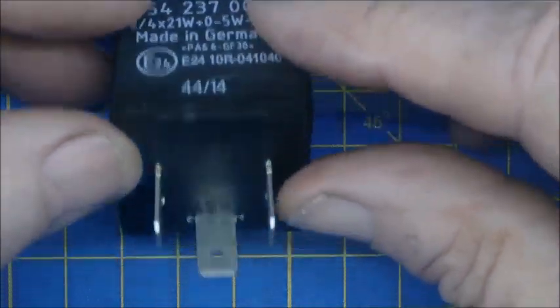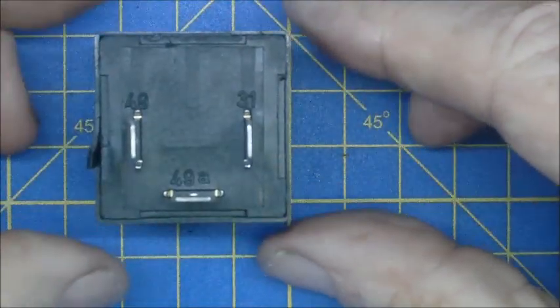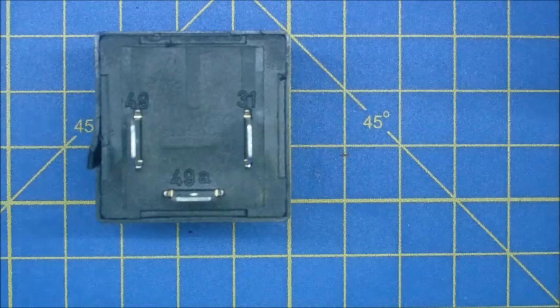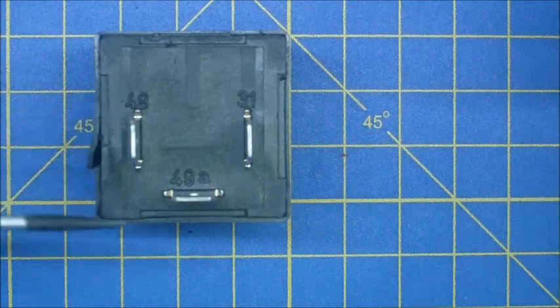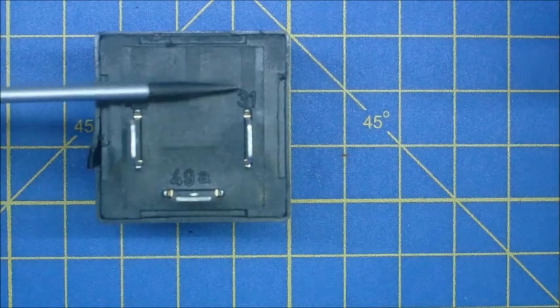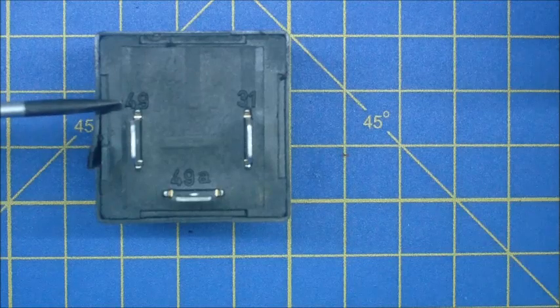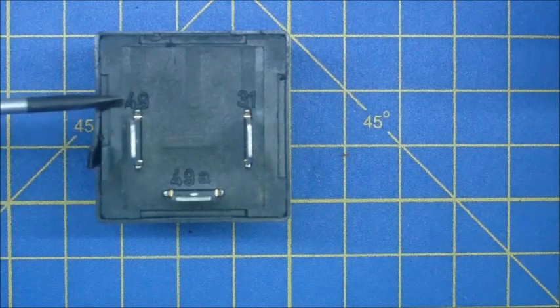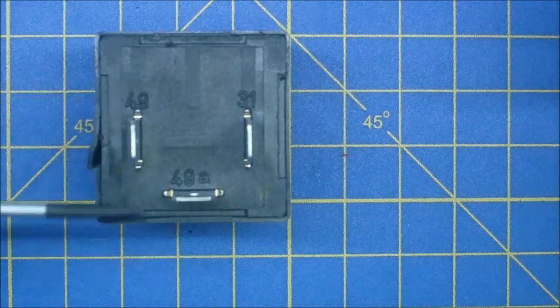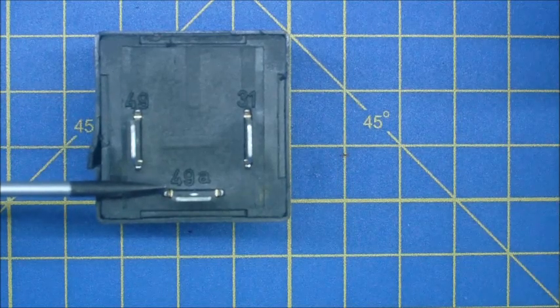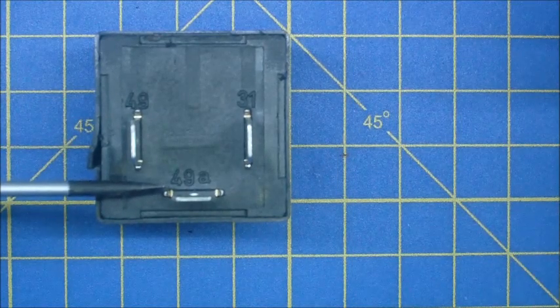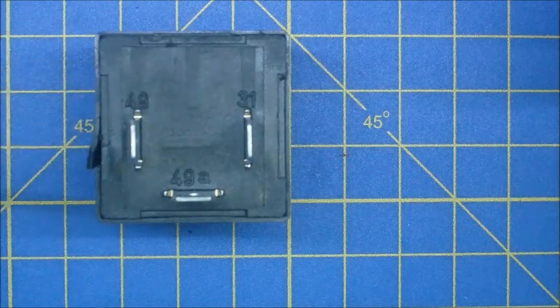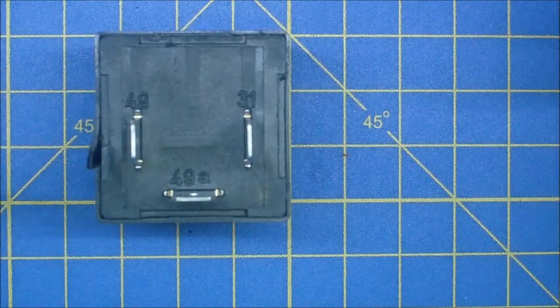If you look here, you can see the terminals are numbered 49, 49a, and 31. 49 is the international DIN code for a live feed into a flasher unit, 49a is the code for an oscillating output, and 31 is the code for ground.